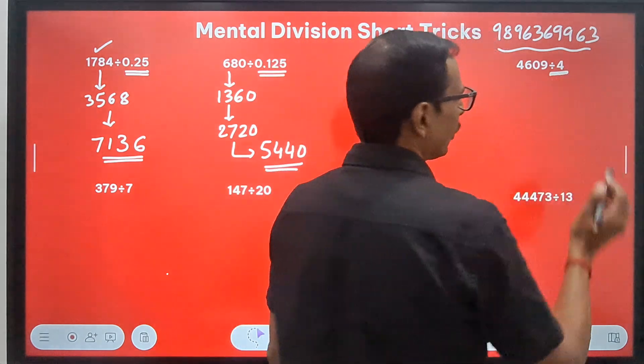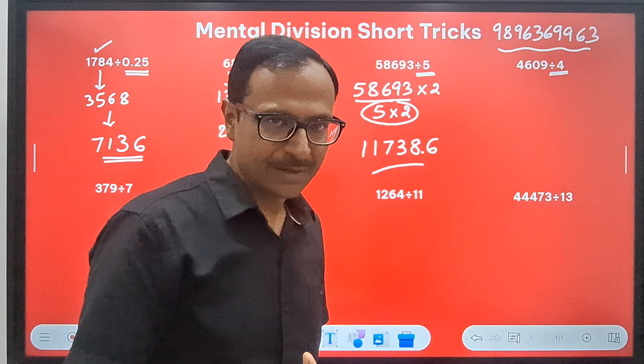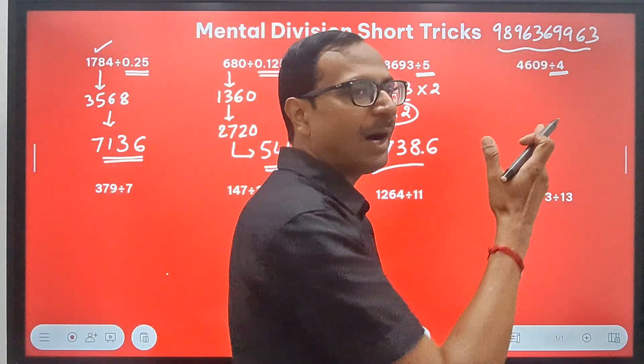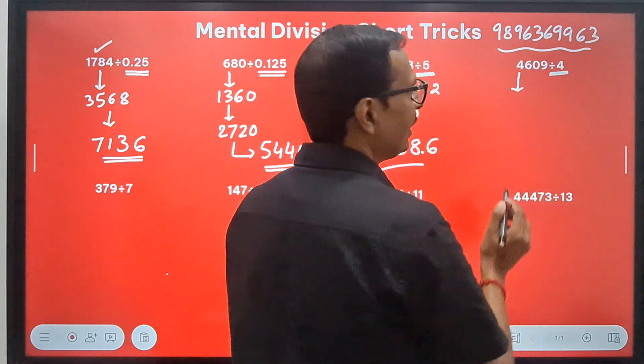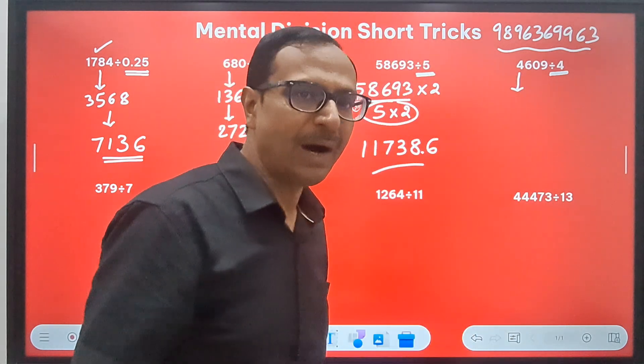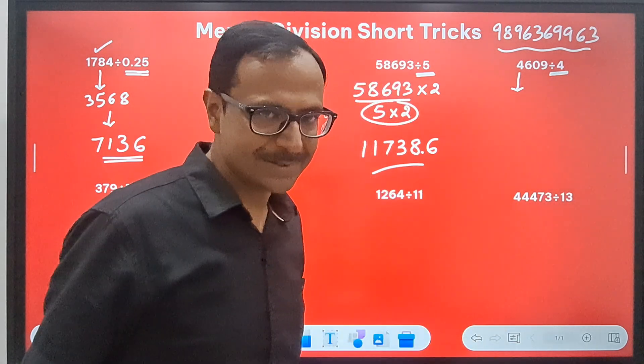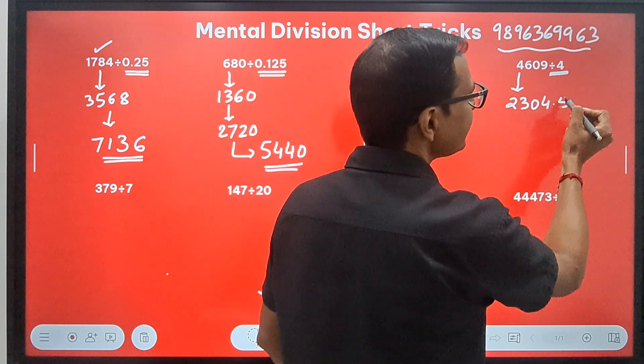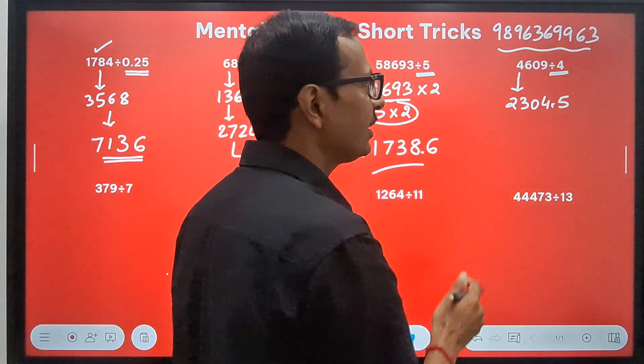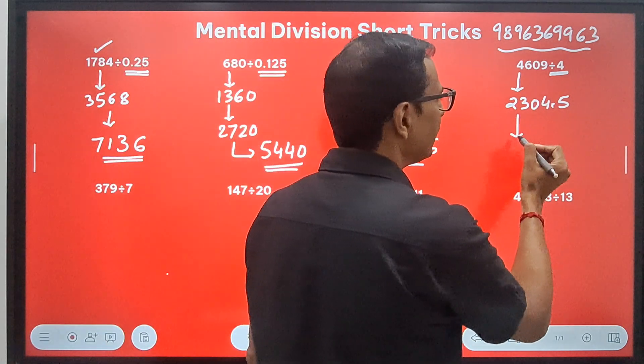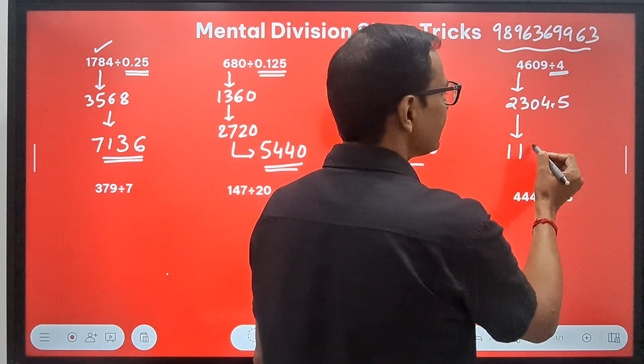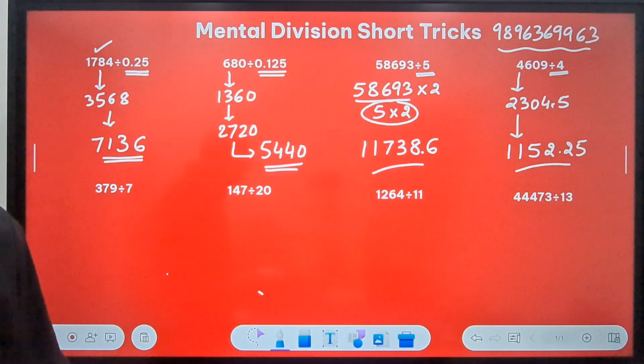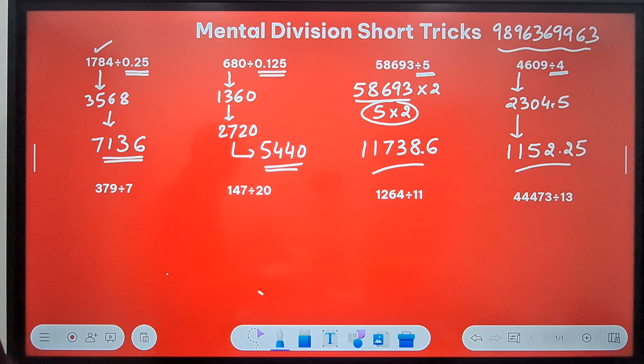When the divisor changes to 4, now comes the use of halving. We should know how to take half of 4609, and then the number obtained will also be halved because division by 4 is division by 2 two times. 4600 becomes 2300, and 09 becomes 04.5, so 2304.5. Take the half of this: 1152.25. Check using calculator—4609 divided by 4 is 1152.25.